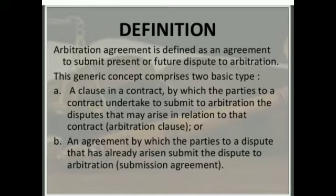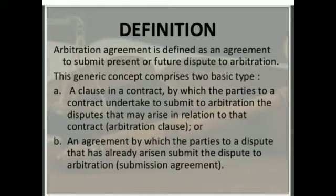An Arbitration Agreement is a kind of agreement where two parties agree that any present dispute that has already arisen, or if any dispute arises in the future, they will go for arbitration. This generic concept comprises two basic types. One, a clause in a contract by which the parties undertake to submit to arbitration the disputes that may arise in relation to the contract — this is called an Arbitration Clause. Second, an agreement by which parties to a dispute that has already arisen submit the dispute to arbitration — this is called a Submission Agreement.